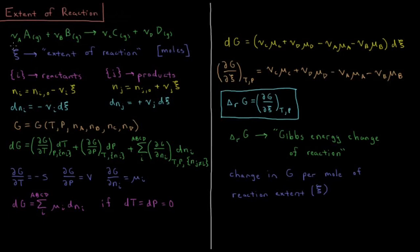This video will discuss the extent of reaction in chemical thermodynamics. We have a typical chemical reaction with two reactants, A and B, both in the gas phase, and two products, C and D, both in the gas phase. Each of them has their stoichiometric coefficient, which is some integer or half-integer.